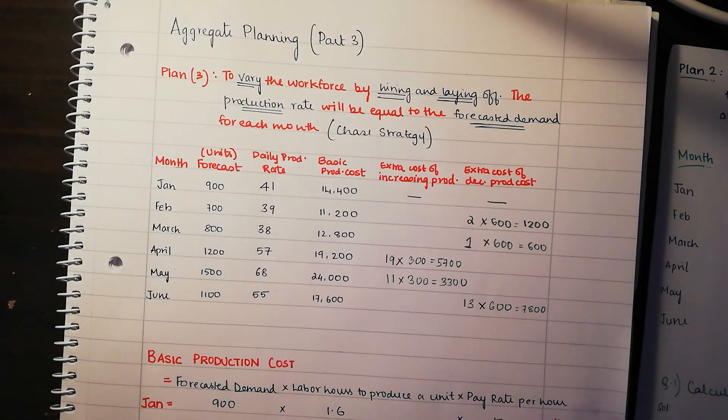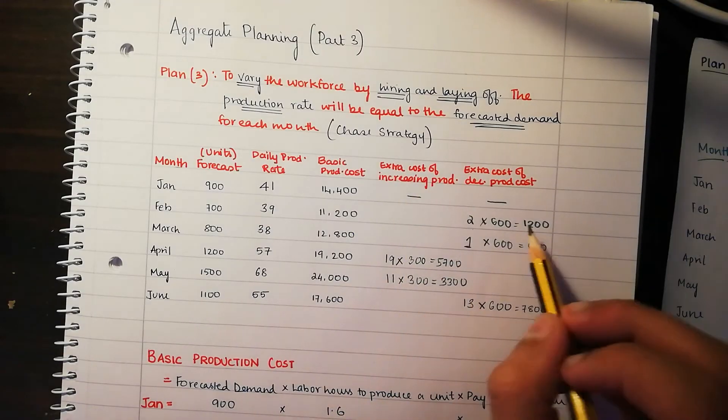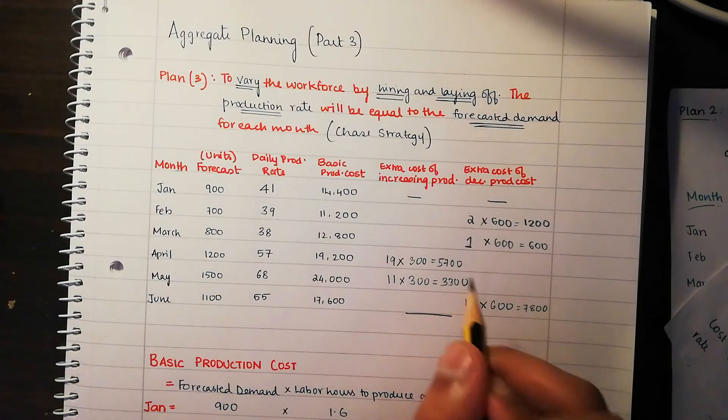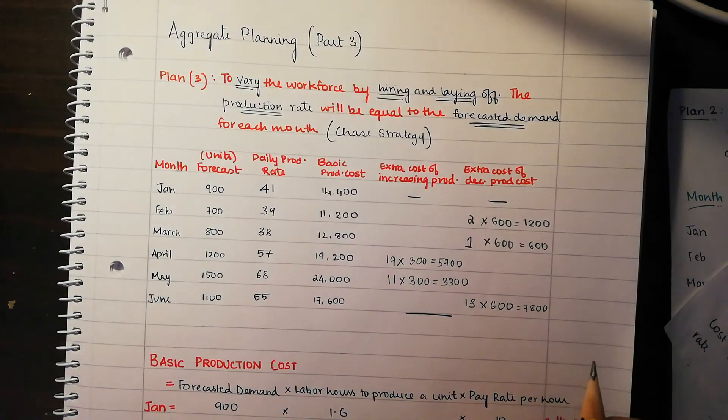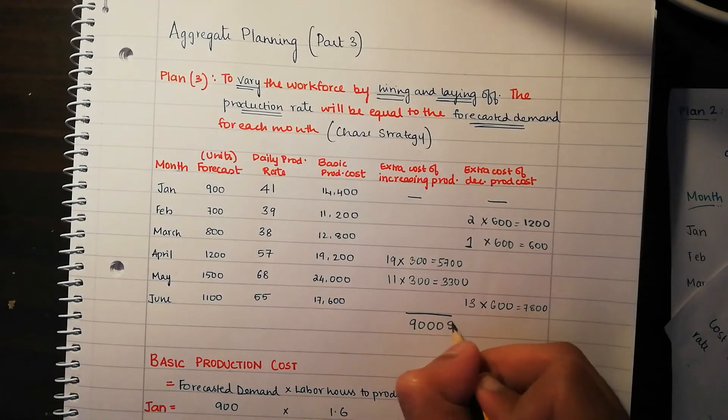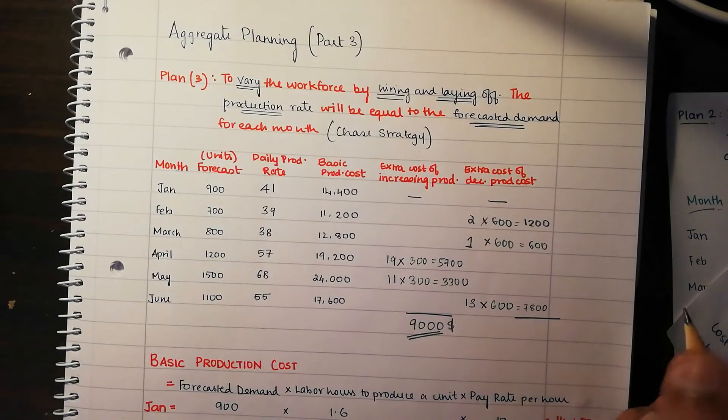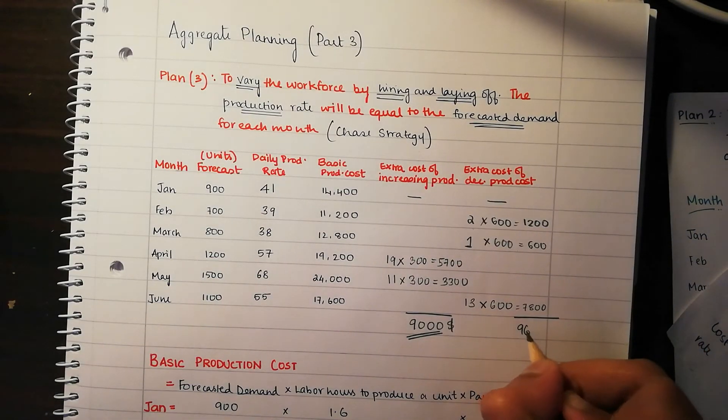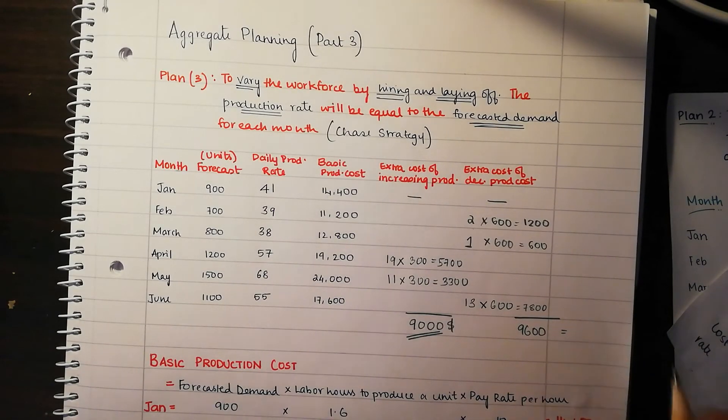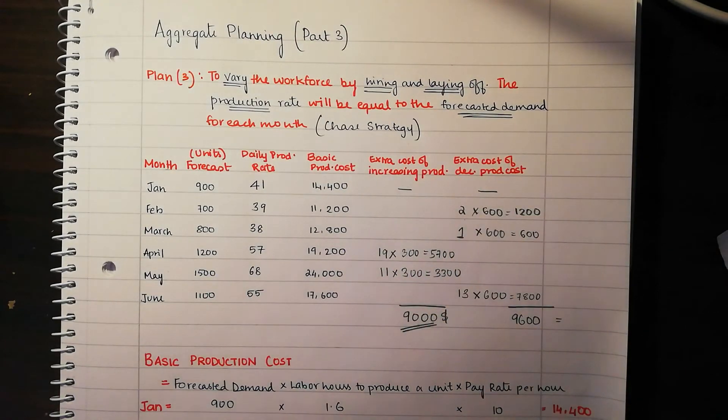We're done with the six months, and now we're going to be finding the total cost for increasing production and the total cost for decreasing production. Once you add this up, 5,700 plus the 3,300, it's going to be $9,000. Your cost for decreasing production in total is going to be 9,600.